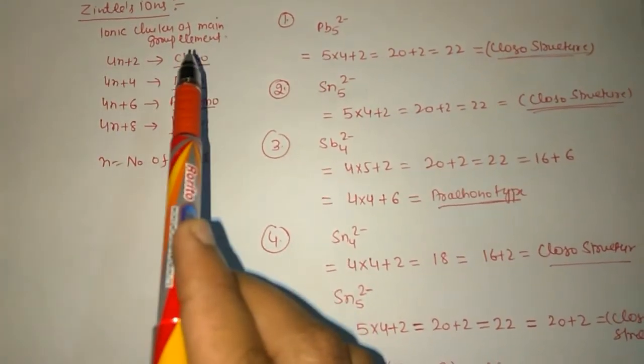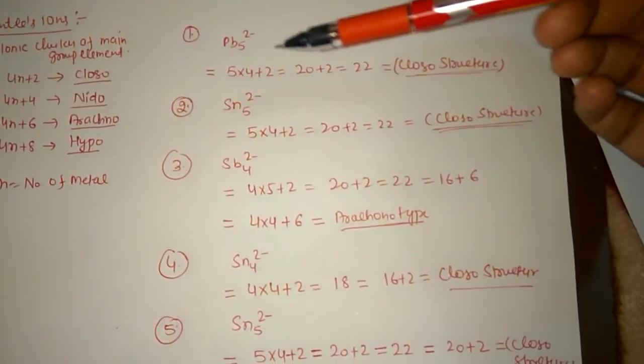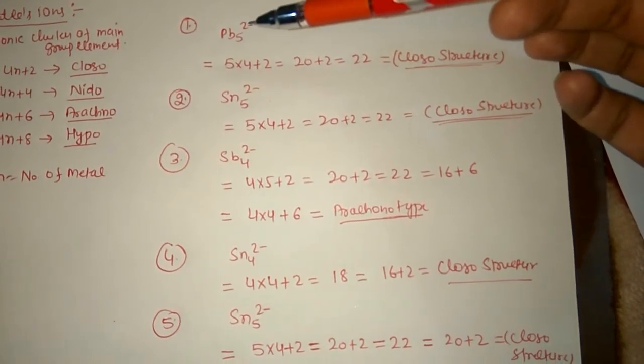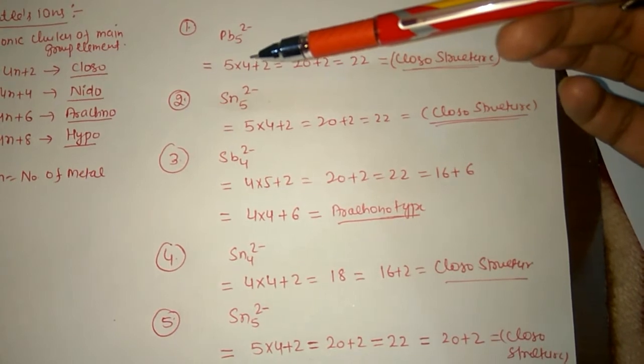Now for example, let us suppose that we have Pb5^2-. In this compound, let's see how many lead atoms are there: 5. Each lead contributes 4 valence electrons: 5×4+2.